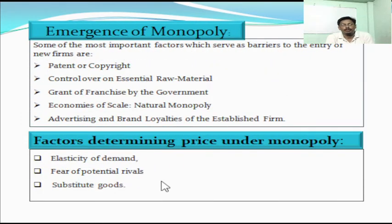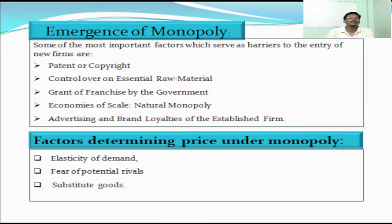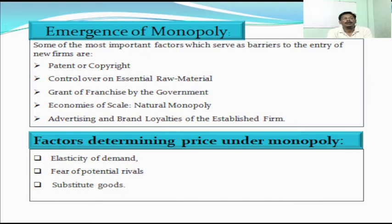Next, there is the emergence of monopoly. What are the reasons behind the emergence of monopoly? The first reason is barriers to the entry of new firms. The restrictions imposed by the government are called barriers to the entry of new firms. Some restrictions are economic, depending on economies of scale of the production unit. Patent or copyright is one type of license provided by the government to a particular firm, whose production is restricted to that firm and cannot be produced by any others.